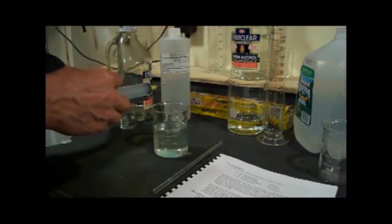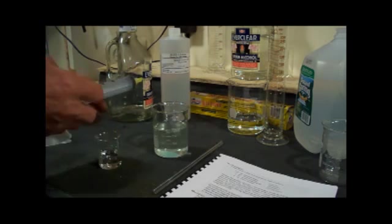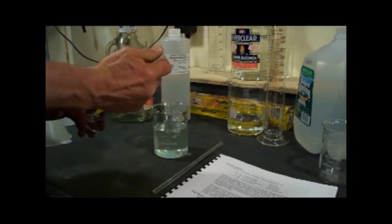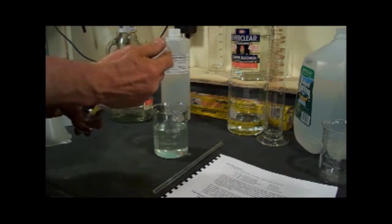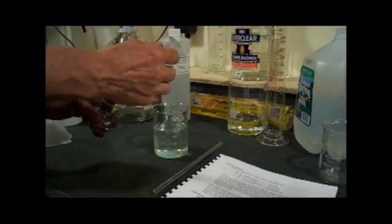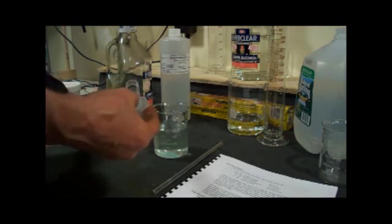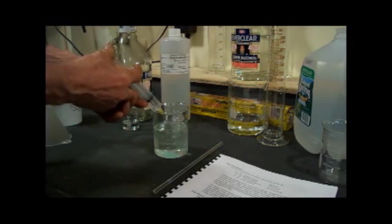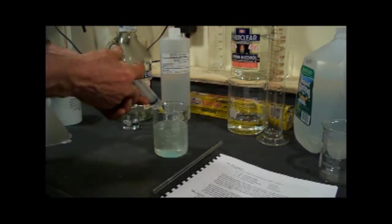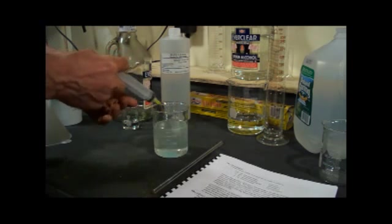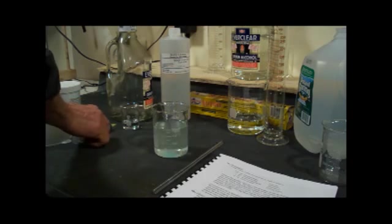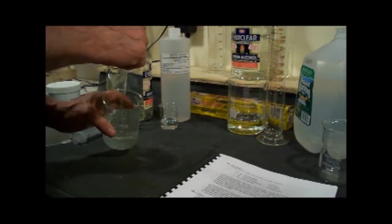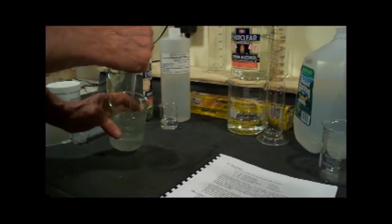And then next we need the alcohol, and we'll use 9 milliliters of the alcohol. Okay, so that's 9 milliliters and we'll add that to the ferrous sulfate. Let's stir that again and dissolve a few more of those crystals in the bottom.